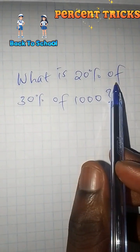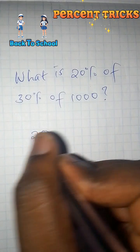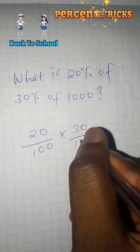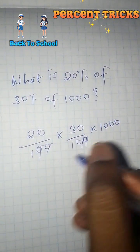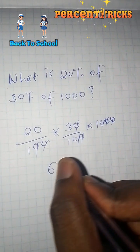What is 20% of 30% of 1000? So here we shall have 20 over 100 multiplied by 30 over 100 multiplied by 1000. So here we shall have 4 zeros. We shall cancel this 4 zeros. So 20 multiplied by 3 is 60.